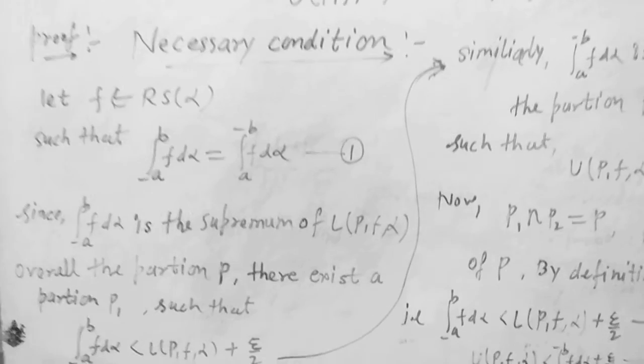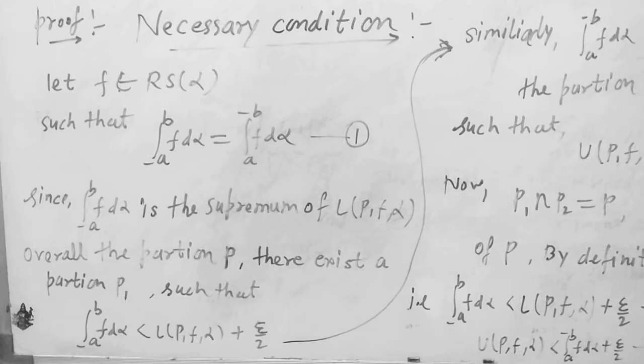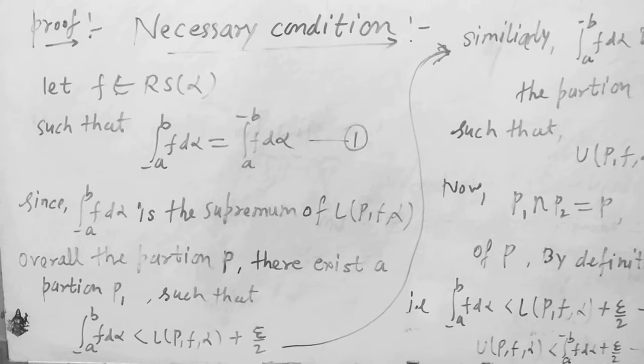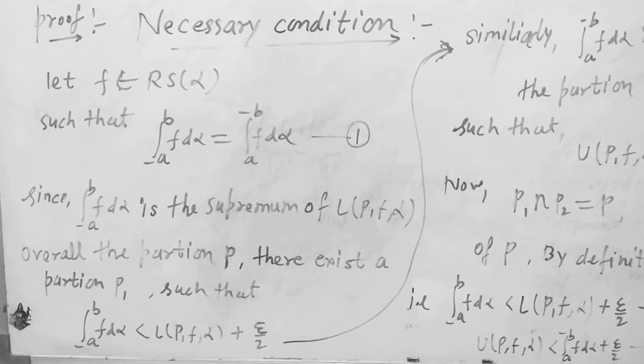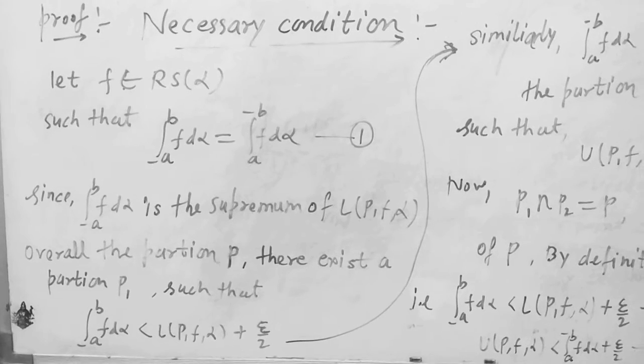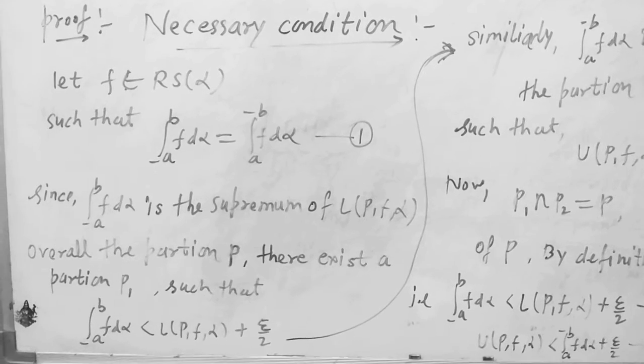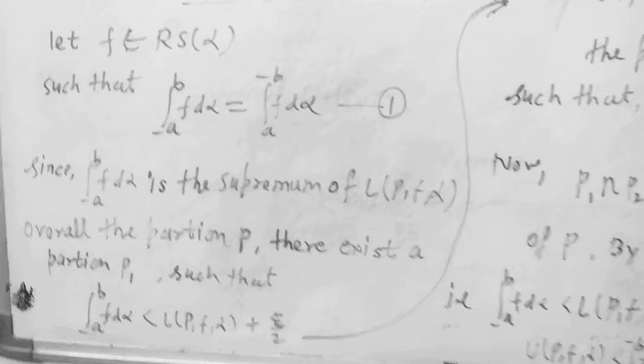Let f belong to RS(α) such that upper integral a to b f dα and lower integral a to b f dα (first equation). Since lower integral a to b f dα is the supremum of L(P,f,α) over all the partitions P, there exists a partition P such that...